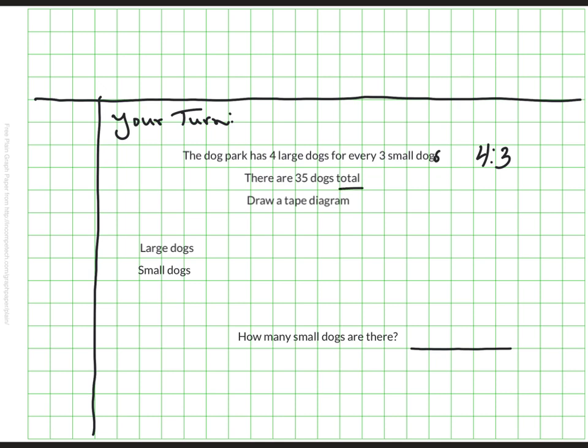I want you to draw a tape diagram showing that ratio and showing how you would calculate how many small dogs there are and be sure that I can see that picture, see that answer when I check your notes.